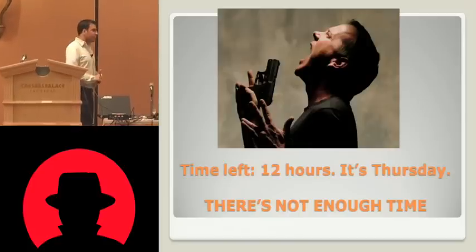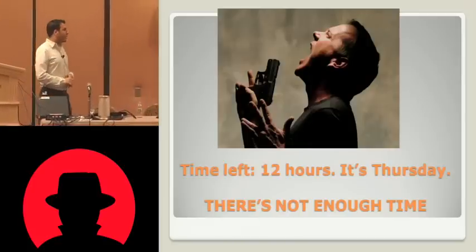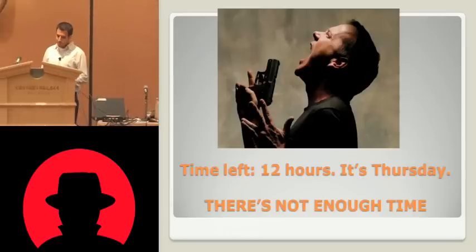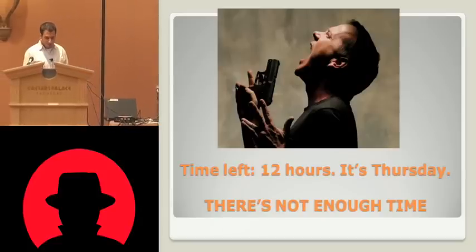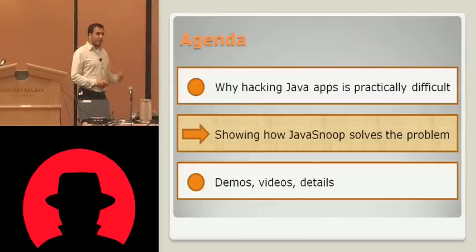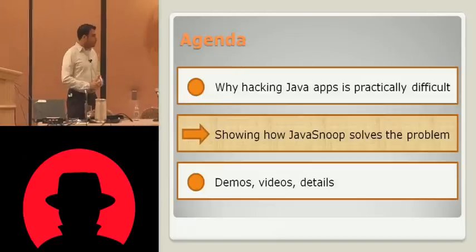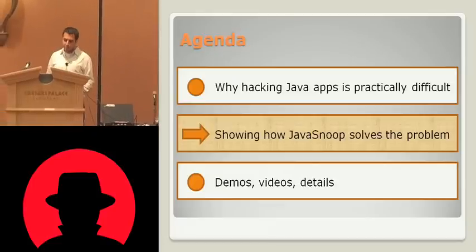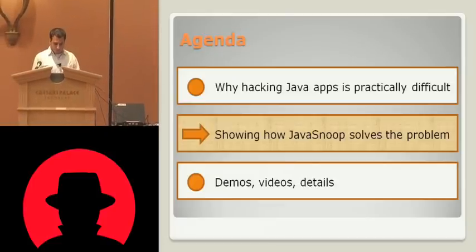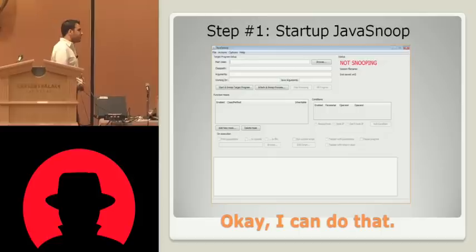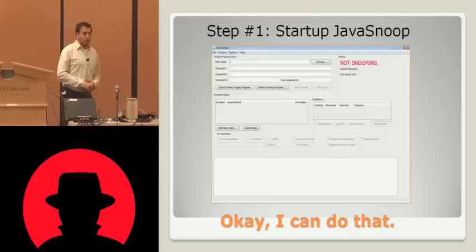Even after learning about all this cool stuff and writing this program, we only have 12 hours left. Thursday is when you start sweating — there's never enough time. So let's talk about how Java Snoop can solve the problem of testing this applet. We're going to go through very simply the life cycle of a typical Java Snoop test. Starting up Java Snoop is really easy — you just double-click on a batch file or a bash file.